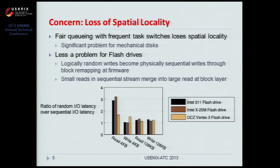One important concern with fair queuing for I/O scheduling is that frequent task switches can lead to a loss of spatial locality. Requests within a single task tend to be spatially near each other, and switching tasks more often breaks that locality. This is a significant problem for mechanical disks, and it's probably why fair queuing was never seriously advocated for disk scheduling.